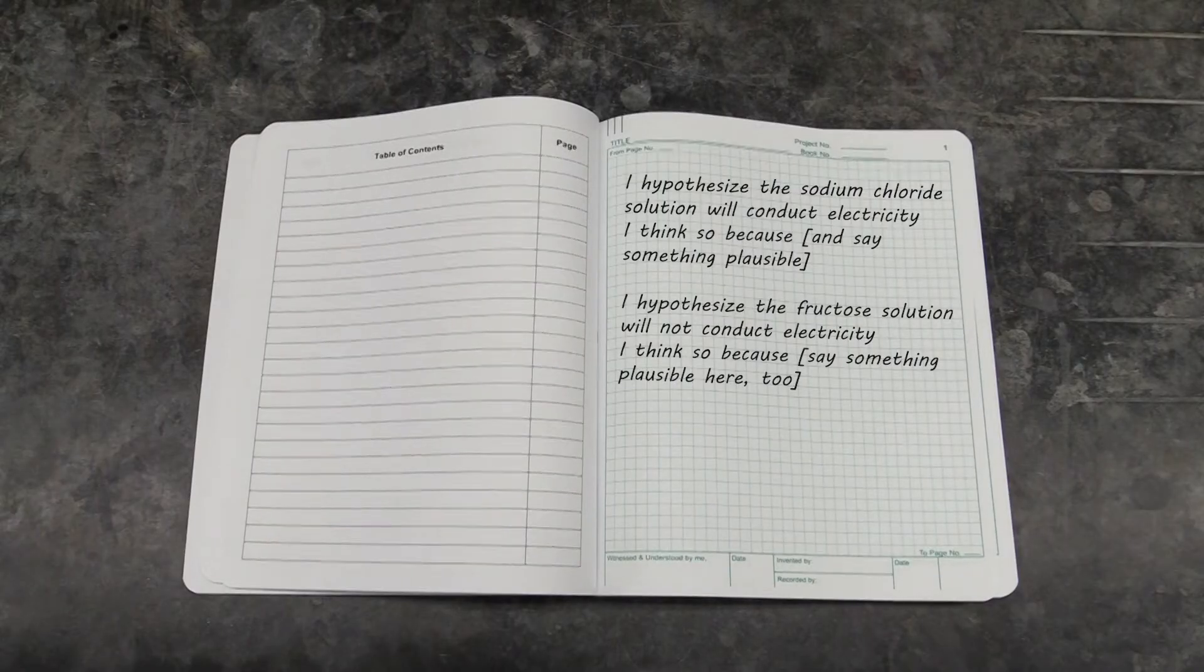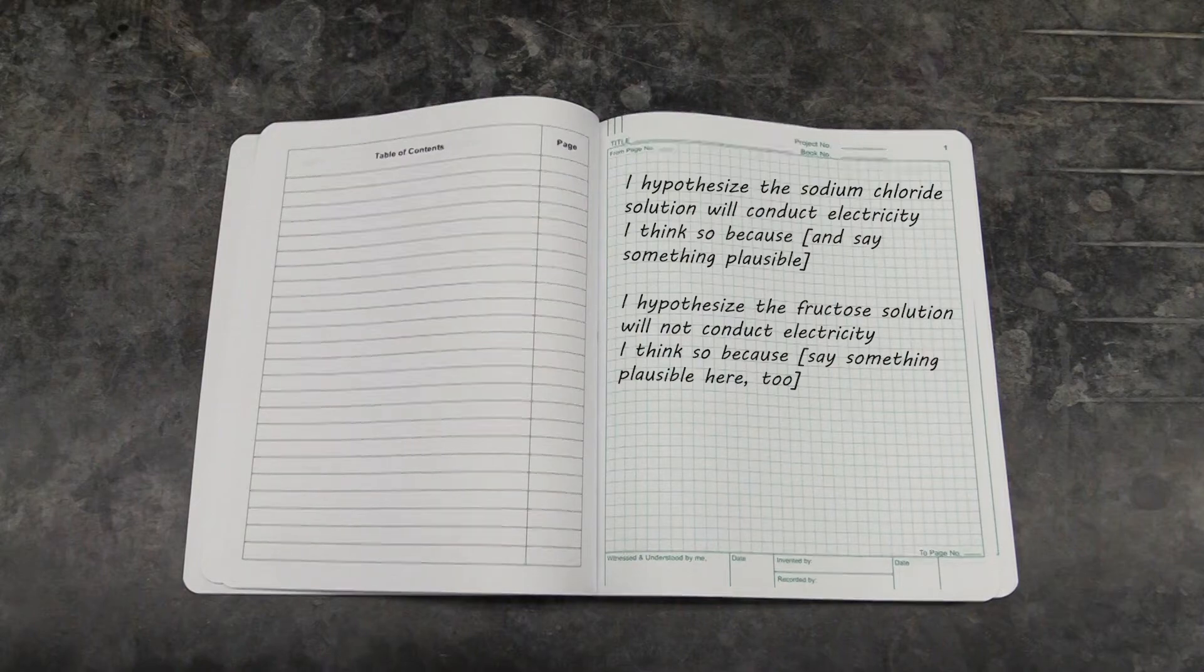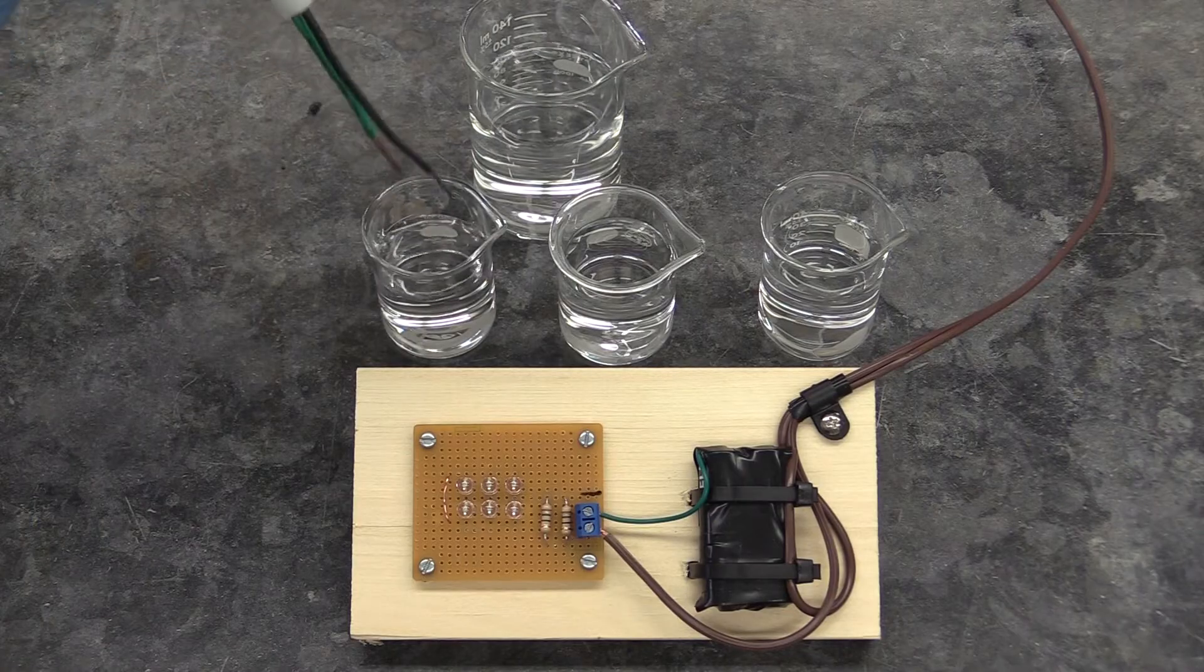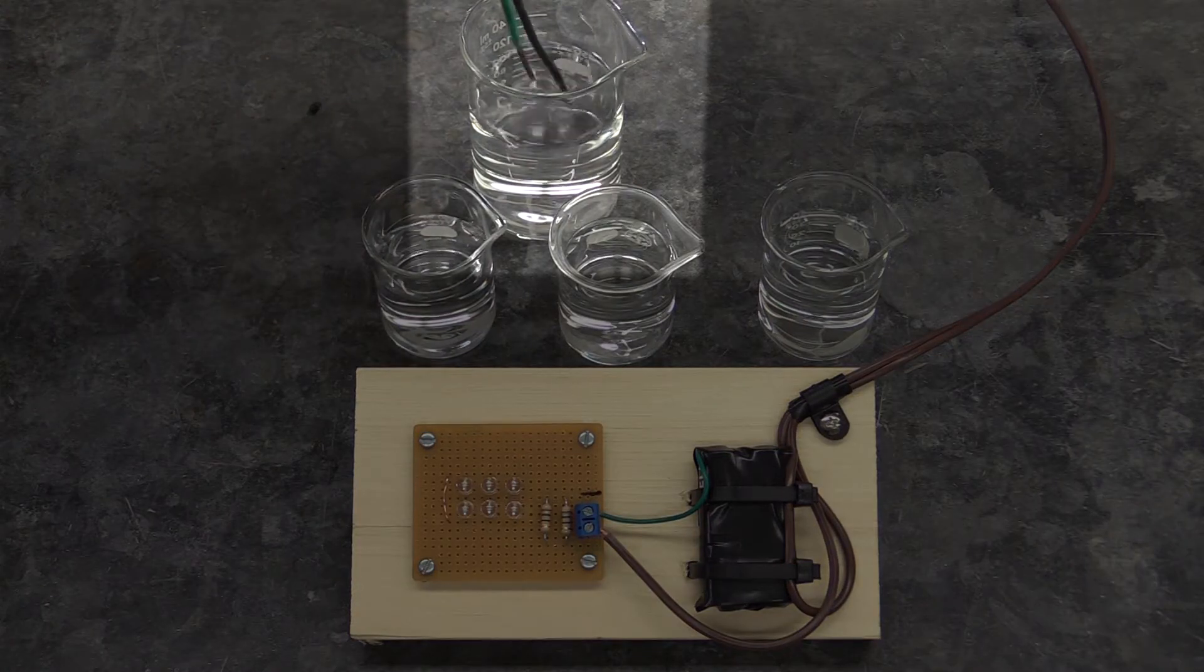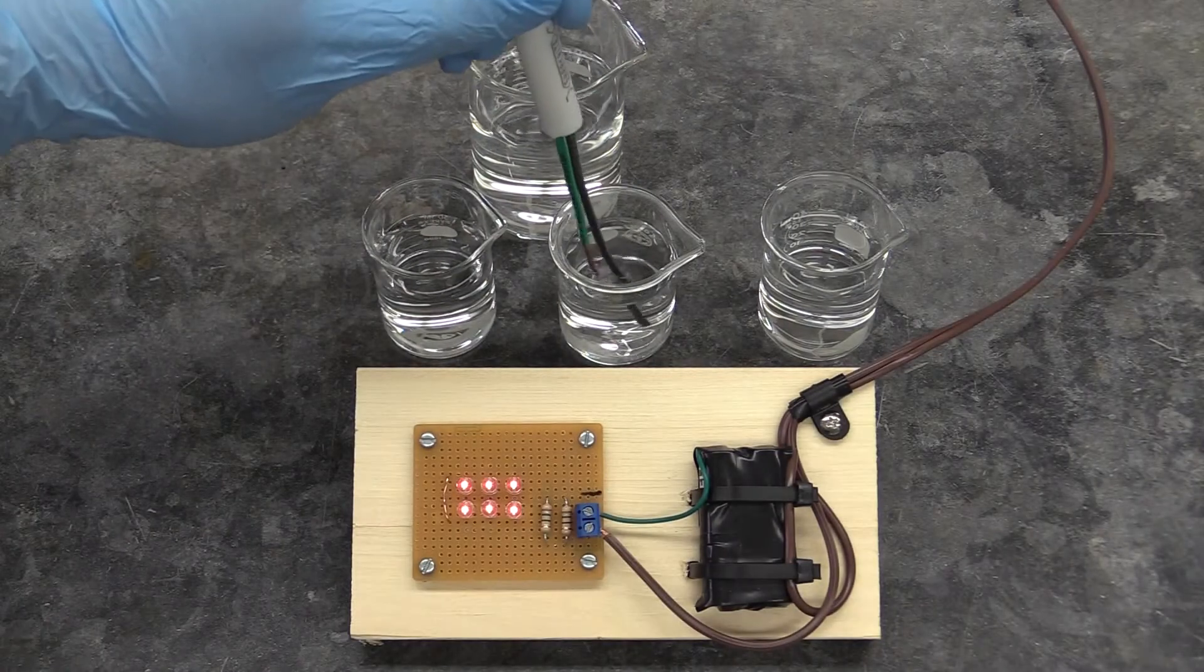Before you come to lab, you will need to hypothesize which of the solutions you'll be given should conduct electricity and which should not. As you're performing your tests, make sure to rinse the lamp's probe in DI water between solutions. If you don't, you'll contaminate them.